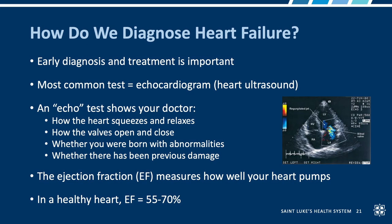The echo test shows your doctor how well the heart squeezes and how well it relaxes — systole and diastole. It tells us how well the valves open and close, whether you were born with any congenital anatomic heart abnormalities, and can look for any evidence of previous damage from something like a heart attack. The ejection fraction that I mentioned is measured in an echocardiogram. In the simplest terms, the ejection fraction tells us how well the heart's pumping — it looks at how big the heart gets during the relaxing phase and how small it gets during the squeezing phase, comparing those two sizes to get a sense of how much blood is ejected each squeeze. In a healthy heart, the normal ejection fraction range is between about 55 and 70%.